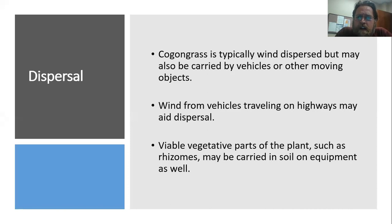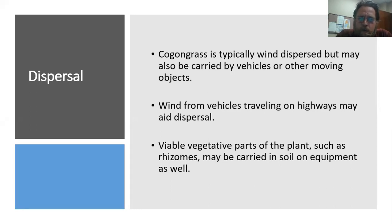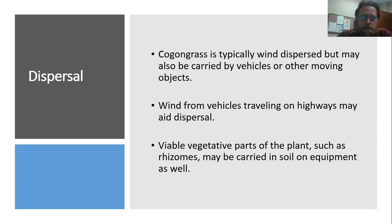Cogongrass is very easy to disperse because the white silky material attached to the seed helps it get picked up by wind. It can also be carried by vehicles or other objects. We often see it along roadways because the wind produced by moving vehicles on highways aids dispersal from place to place. Rhizomes can also be carried in soil or on equipment, so that's something to pay attention to.